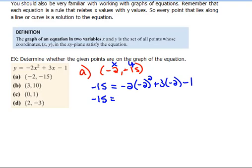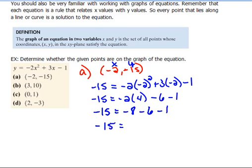So, when we simplify this, that's going to be negative 2 times negative 2 squared is a 4. And then here, 3 times negative 2 would be negative 6 minus 1. So that's negative 15 equals negative 8 minus 6 minus 1, which says negative 8 and negative 6 would be a negative 14 minus 1 is a negative 15. So,